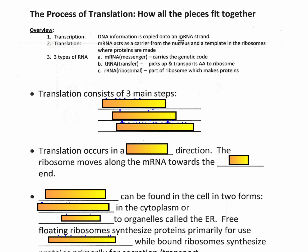You also need to make sure you understand the difference between DNA and RNA. Up until now we've put a little M on RNA, which stands for messenger RNA, but in translation there are two additional types: tRNA and rRNA. tRNA is very important. For translation, the mRNA that was created from copying the gene in the DNA will leave the nucleus and go into the cytoplasm of the cell, where it will meet up with ribosomes.